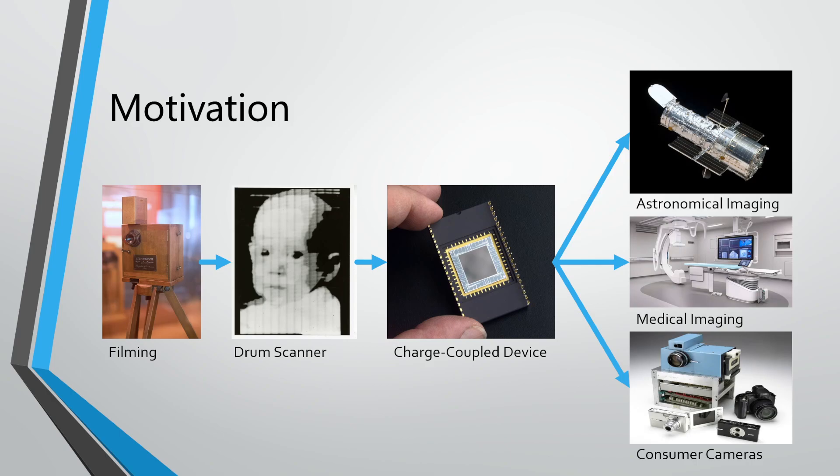Quickly, this technology spread to many fields: astronomical imaging, medical imaging, and consumer cameras. With the Hubble Space Telescope, we understand the universe a lot. With medical imaging like X-ray, diagnostic analysis tools are available and that saves people's lives. With consumer cameras, we save moments in daily lives easily. Note that I didn't put cell phones in consumer cameras on purpose, because they are using active pixel sensors, which I will talk about later.